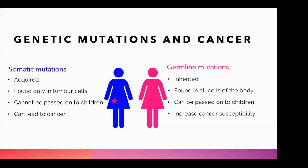For example, if we had to take a blood sample from somebody, you would see that mutation there as well. These types of mutations can be passed on to children. And what these mutations do is typically increase our susceptibility to develop cancer in our lifetime.